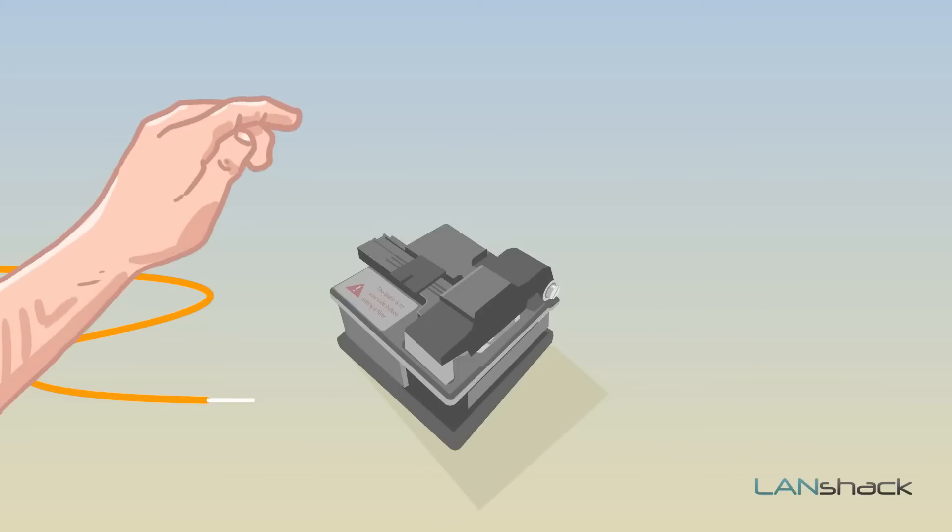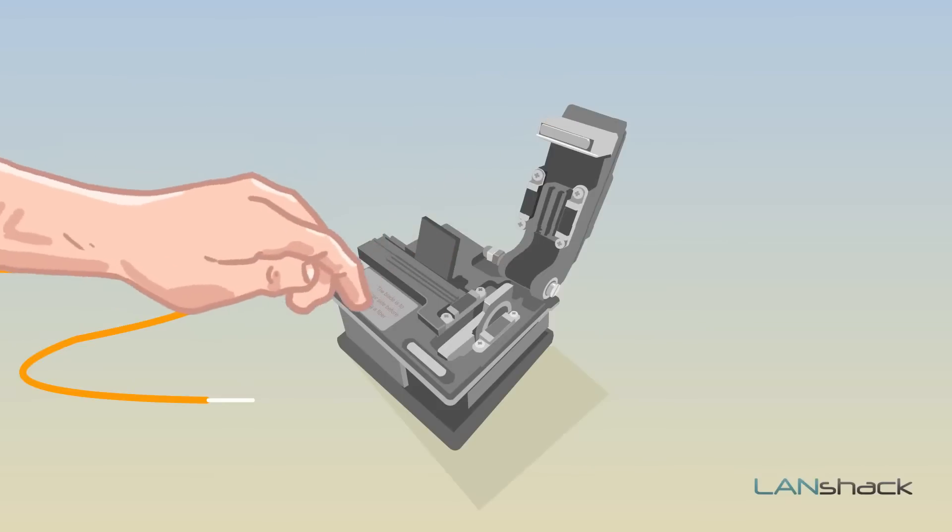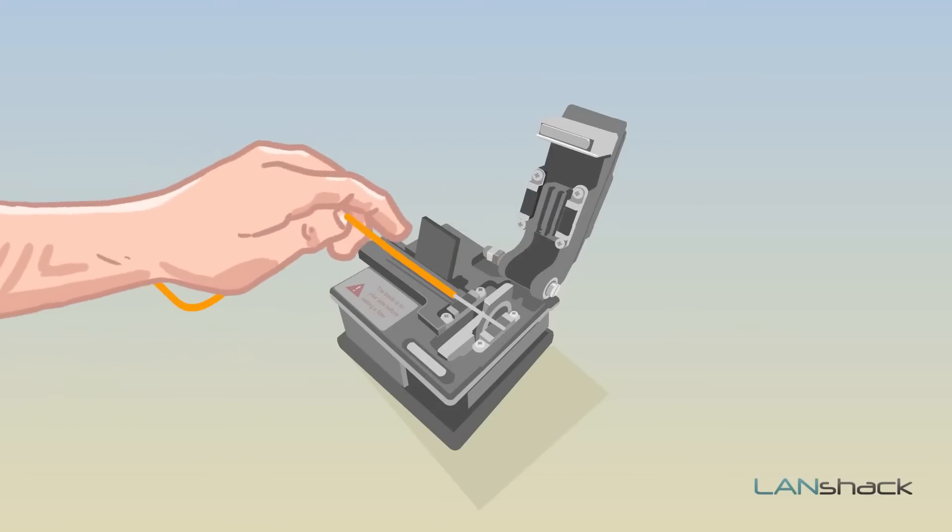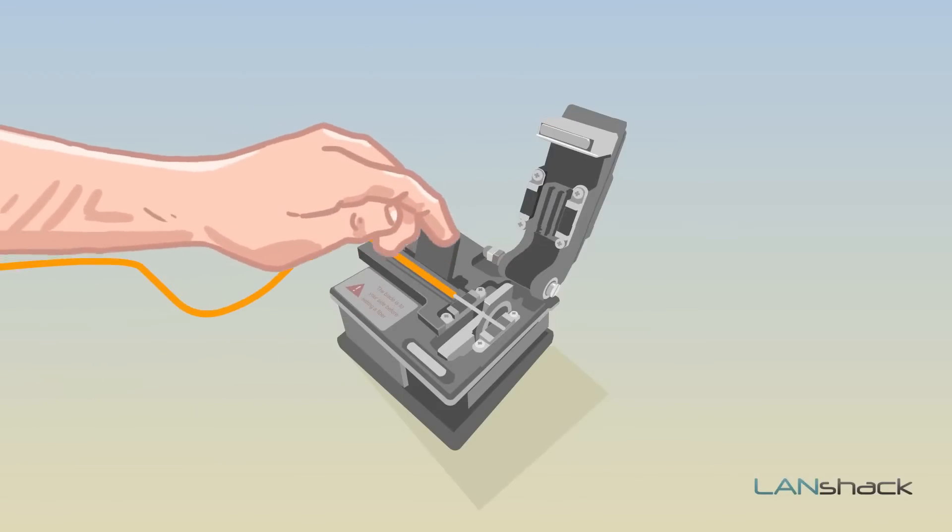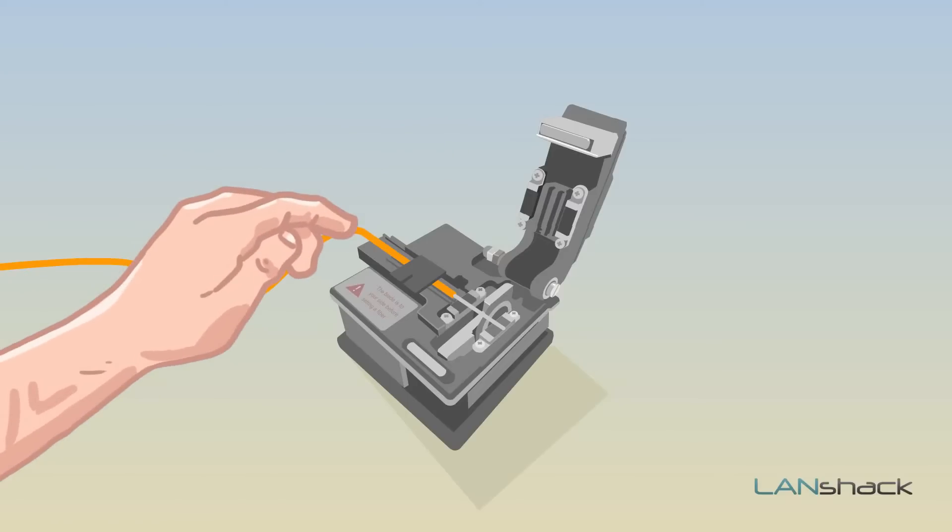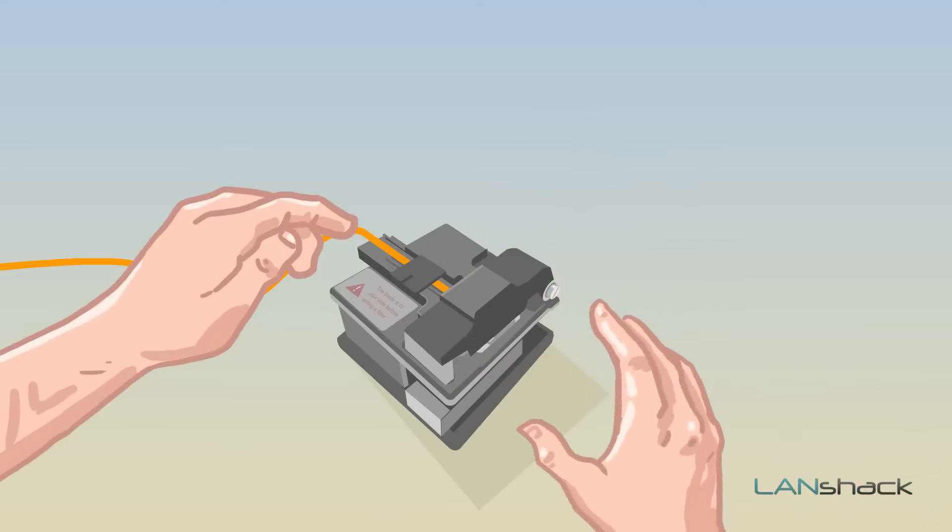Next, you're going to load the fiber into the cleaver unit. Open the two clamps on the cleaver and gently lay the fiber into the left side. Close the clamp to hold the fiber buffer in place. Make sure the fiber is straight and then move the scribe wheel to the front of the cleaver. Gently close the right clamp to hold the fiber and push the block to the back to cut the fiber.